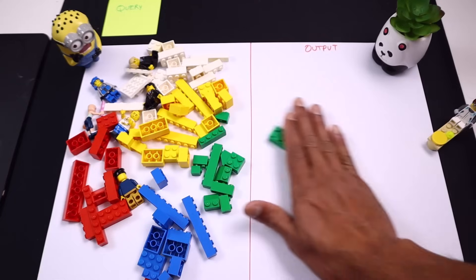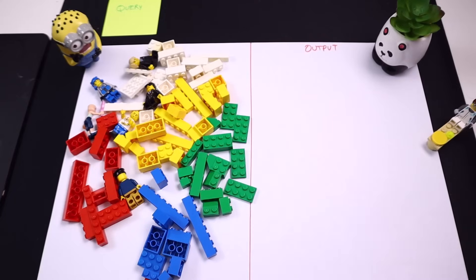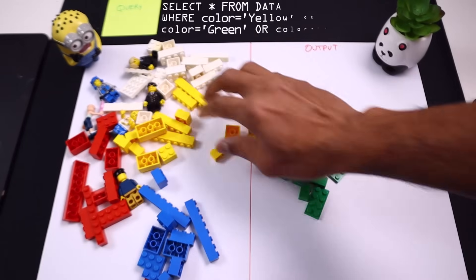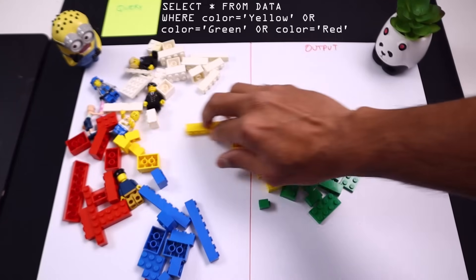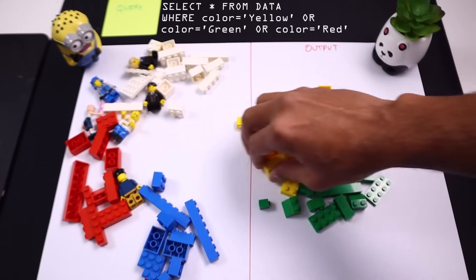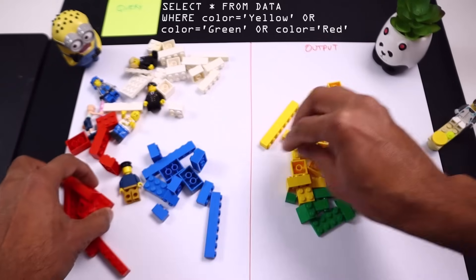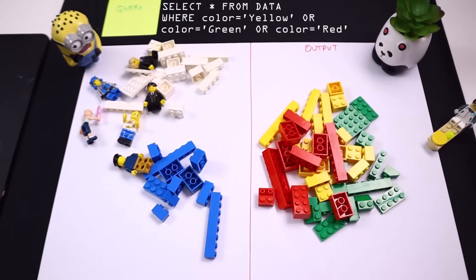Another way to write SQL queries is especially if you have got or condition. Let's say you want to look at all the colors where color is green, red, or yellow. You could write a very complex or condition that will basically have multiple parameters. Select star from data where color is yellow or color is green or color is red.